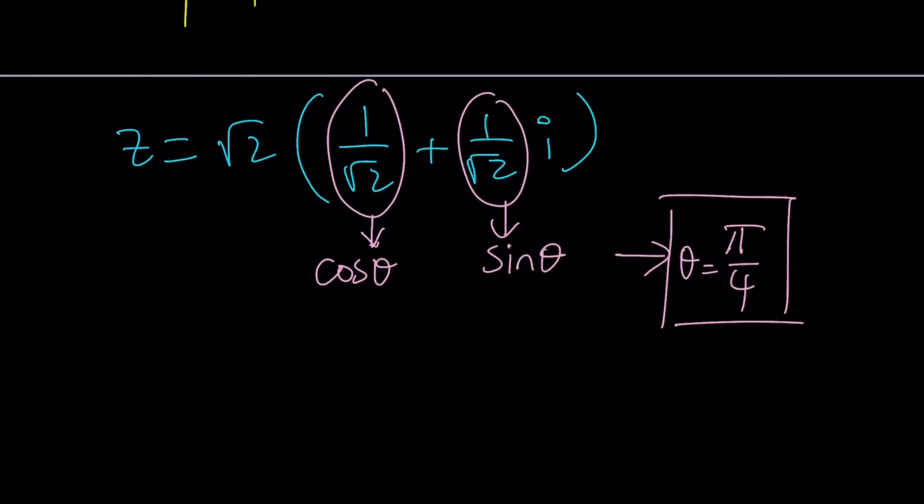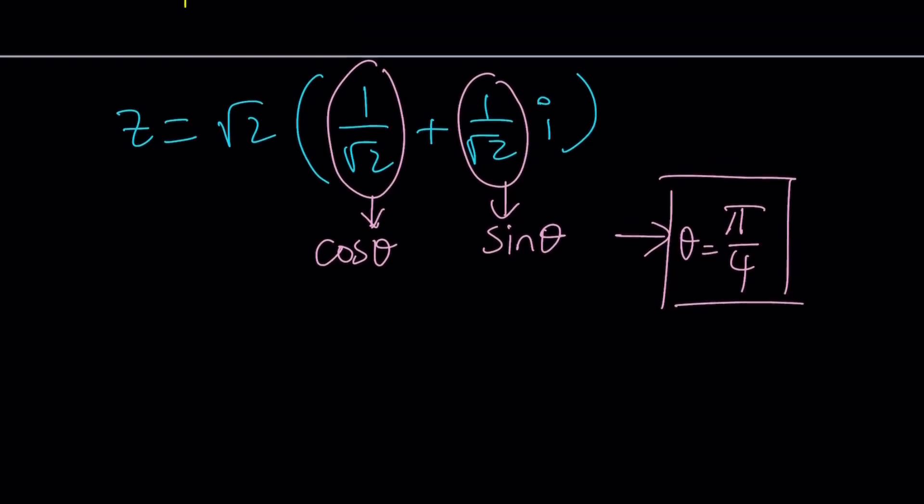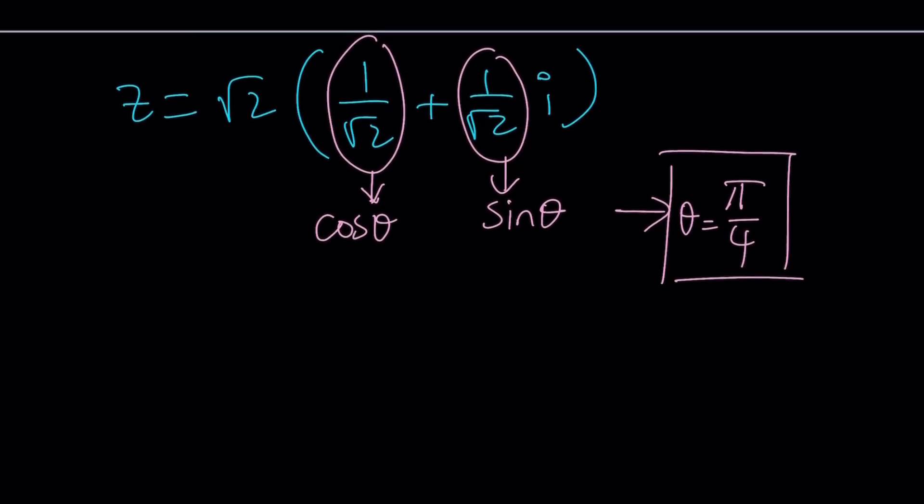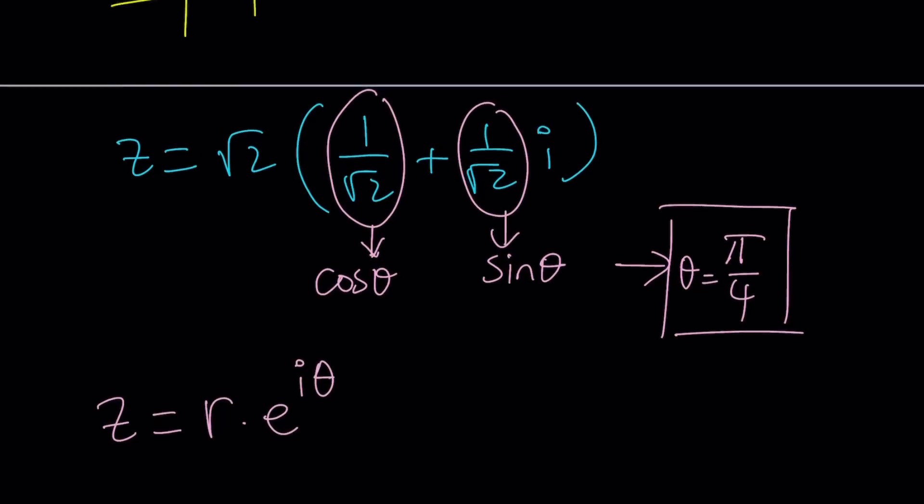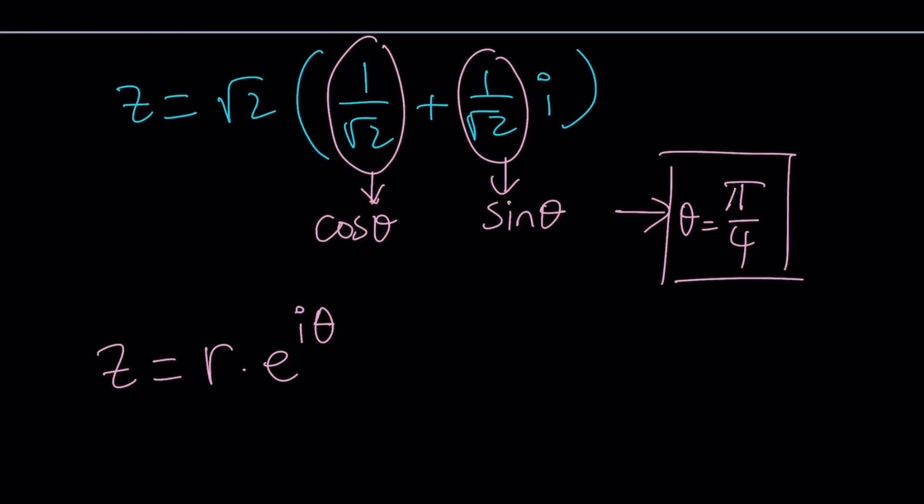Since theta is π over 4, if you write this number as a principal branch, it's going to look like this. How do you write a complex number in polar form? You write it as r times e to the power iθ, where theta is the angle we talked about.